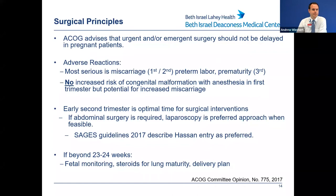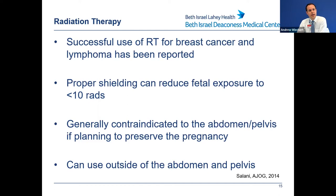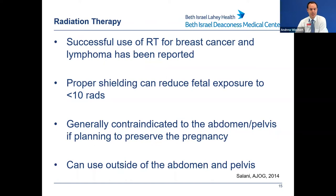Radiation therapy: there are reports of successful use for breast cancer and lymphoma in pregnancy with proper shielding, targeting fetal exposure below 10 centigrade (10 RADs). Therapeutic radiation to the abdomen or pelvis is contraindicated if you're not planning termination of pregnancy — therapeutic doses to the pelvis start at 4,500 centigrade, far above all thresholds for fetal toxicity. If the uterus is going to receive a therapeutic dose of radiation, that pregnancy will not continue, and all parties including the patient must understand that. Radiation can be used outside the abdomen and pelvis with appropriate shielding in the hands of experienced radiation oncologists.